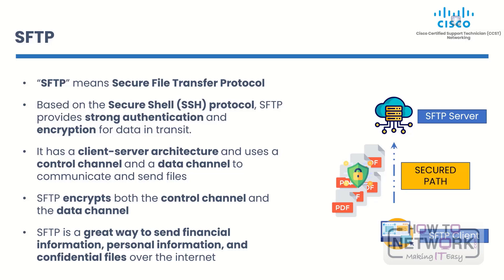SFTP ensures that data is safe and can't be intercepted or changed. In addition to encryption and authentication, SFTP has security features such as the ability to delete files securely, control file access permissions, and resume secure file transfers. Because of these features, SFTP is a great way to send financial information, personal information, and confidential files over the internet. SFTP is used across a wide range of industries like finance, healthcare, and government. It works with many operating systems including Linux, Windows, and Mac OS, and is commonly used for secure file transfer and management such as moving files between servers, uploading to remote web servers, and backing up data.